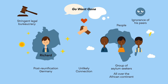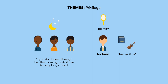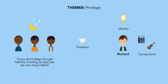Themes. Privilege. The various privileges Richard holds shape his identity in the text. They shape how he approaches his retirement — he plans to spend it on highbrow pursuits like reading or listening to classical music. On the other hand, the asylum seekers sleep most of the time: 'If you don't sleep through half the morning, a day can be very long indeed.' Richard has the freedom to choose hobbies, but the asylum seekers face a daunting and seemingly impossible array of tasks. While his to-do list includes menial things like scheduling a repairman for the dishwasher, the refugees face daunting socio-political problems like needing to eradicate corruption.